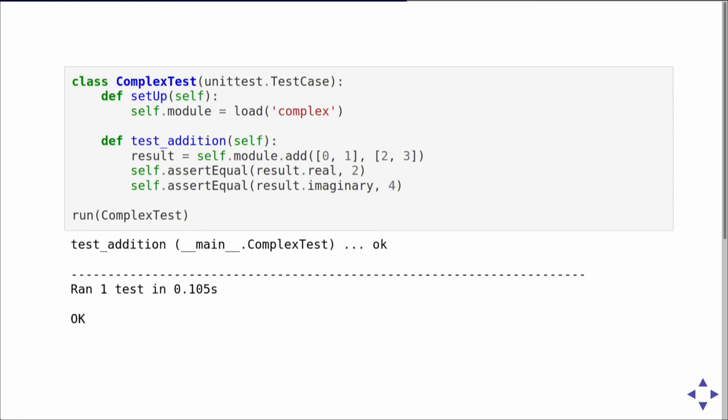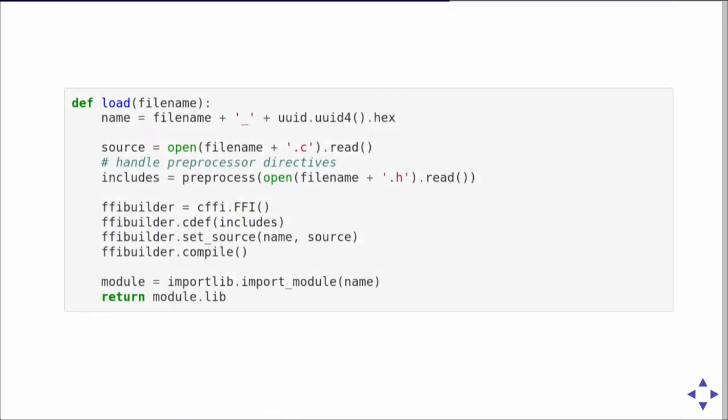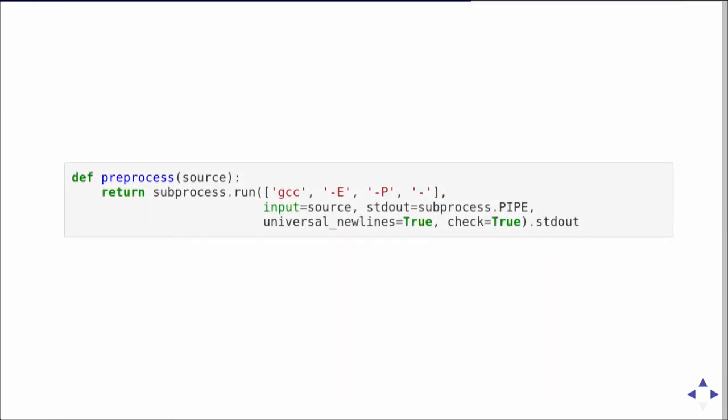For this example to work we can't use the previous load function, because it only looked at the module's own header file and doesn't know about the other included header file. CFFI cannot deal with include statements directly, so we need to run a preprocessor — like the GCC C preprocessor — over the source code to resolve all includes and directives. This preprocess call does that, and at the end we get one large string containing the contents of both header files, which CFFI is happy with.